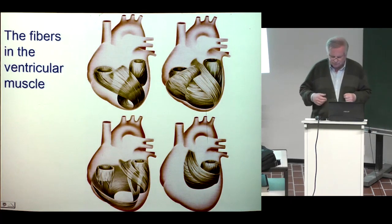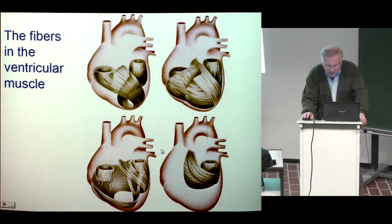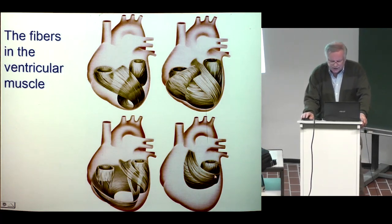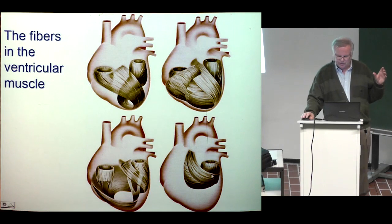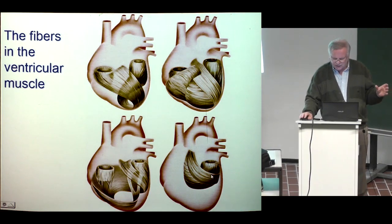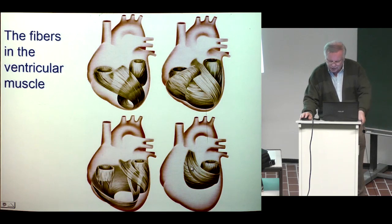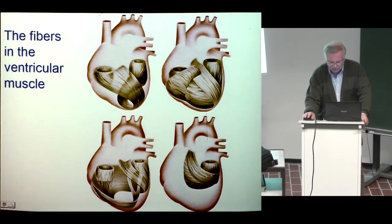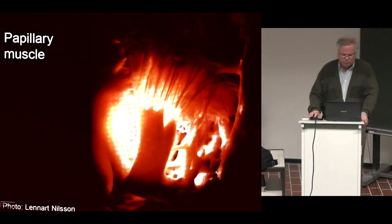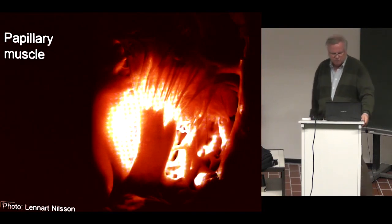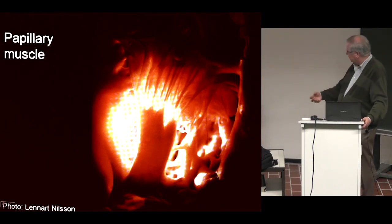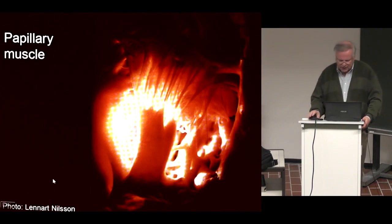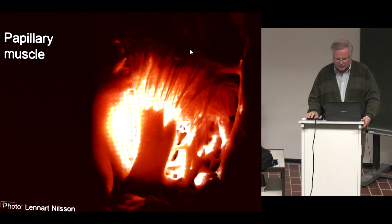The left ventricle is thicker than the right ventricle — not because the cells are thicker, but because there are more cells; there are extra fibers around the left ventricle. Here is a beautiful picture of the papillary muscle from the apex, the bottom of the ventricle, where these muscles go to the tricuspid and mitral valves.